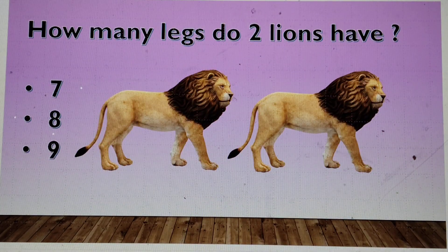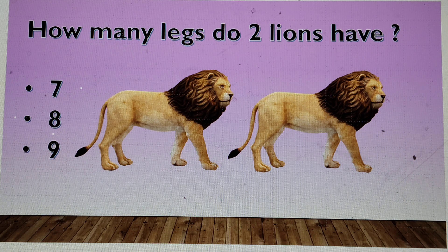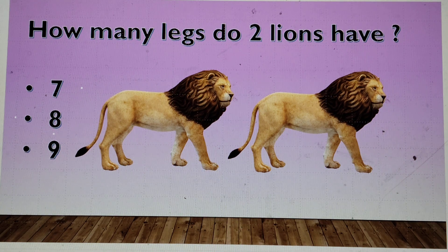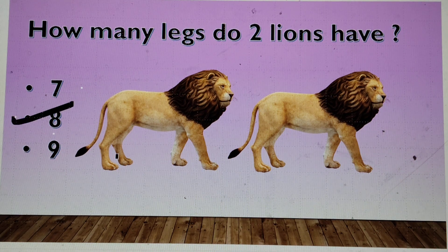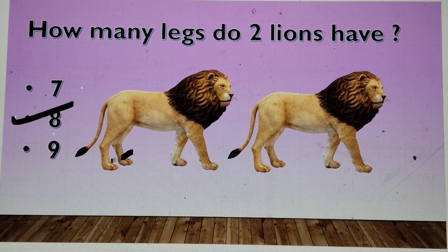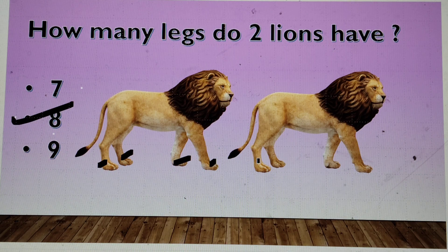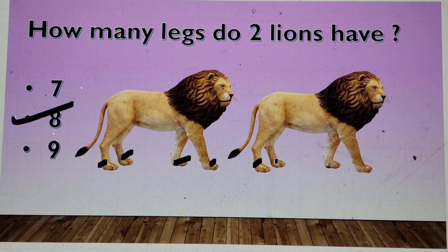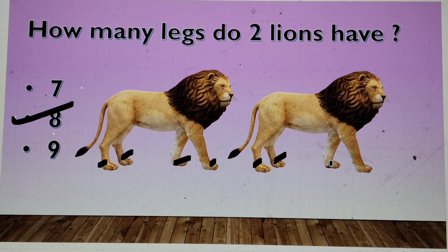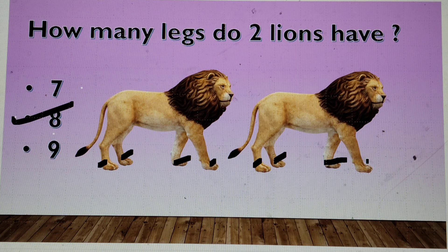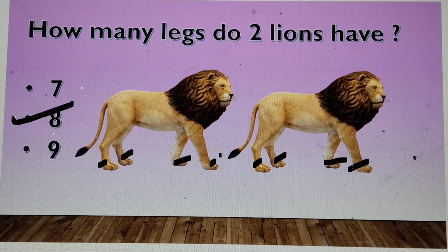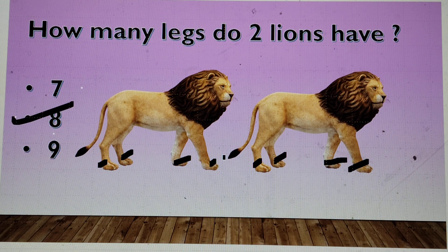How many legs do 2 lions have? 7, 8 or 9? 8. 1, 2, 3, 4, 5, 6, 7 and this is the 8th one. So 2 lions would have 8 legs.